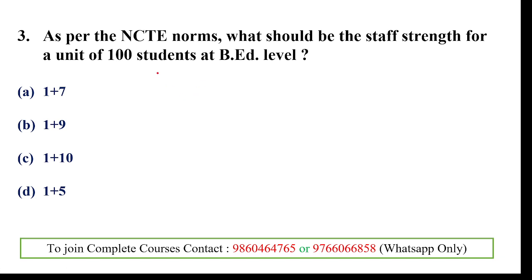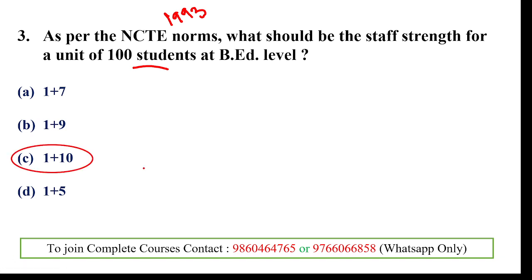Third question: as per the NCTE norms, what should be the staff strength for a unit of 100 students at BA level? NCTE stands for National Council for Teacher Education. It is a statutory body of the Indian government set up under the NCTE Act in 1993, formally operative from 1995, to oversee standards, procedures, norms and processes in the Indian education system. The norm recommended for a unit of 100 students at BA level is 1 plus 10.